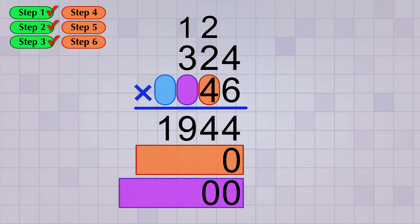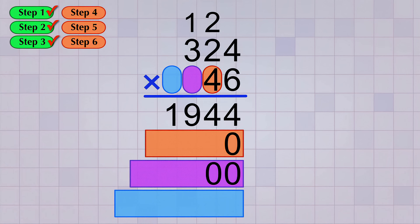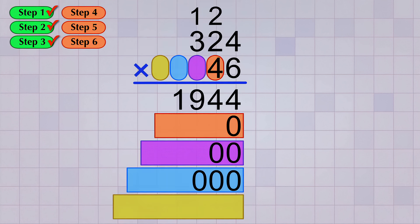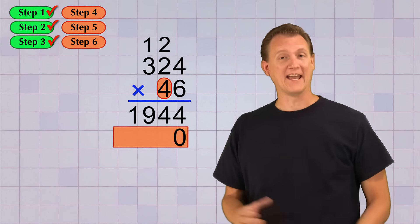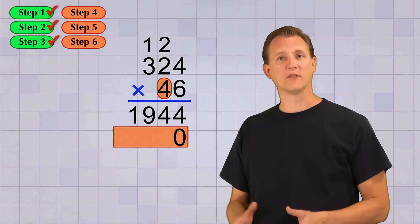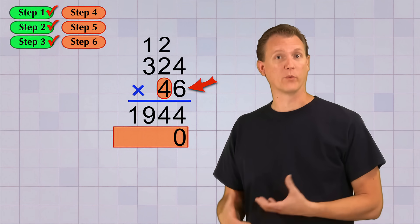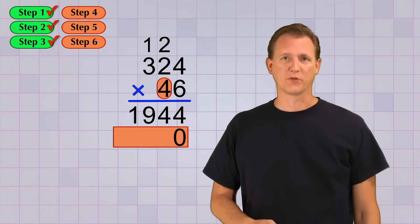And if we had a fourth digit, there'd be a fourth answer line, shifted over by three zeros. And if we had a fifth bottom digit, there'd be a fifth answer line, shifted over by four zeros. See the pattern? Boy am I glad we've only got two bottom digits! And now you see why we always put the number with the fewest digits on the bottom when we're multiplying. But let's continue with our problem.